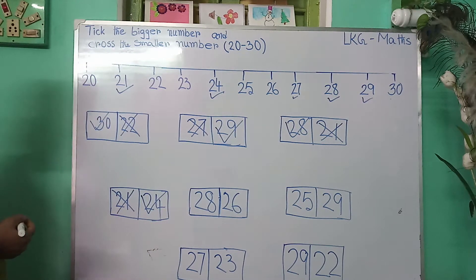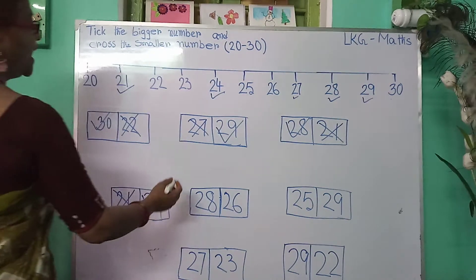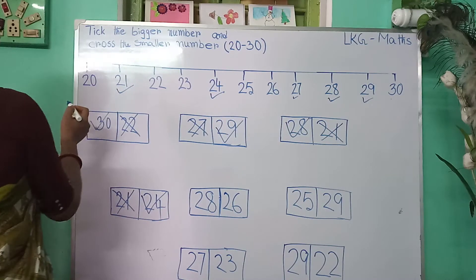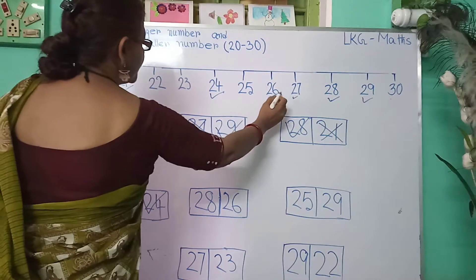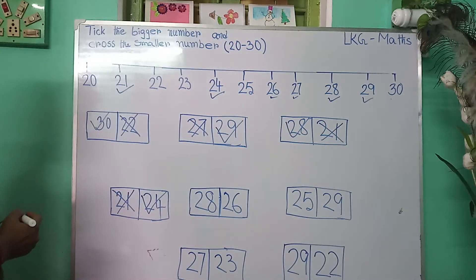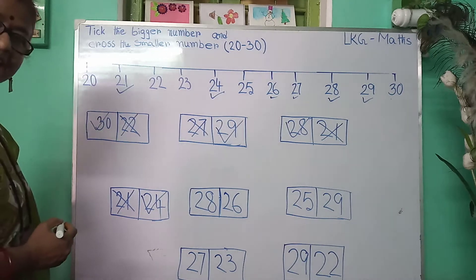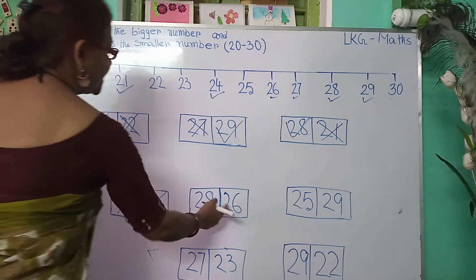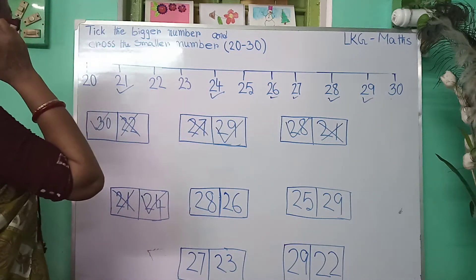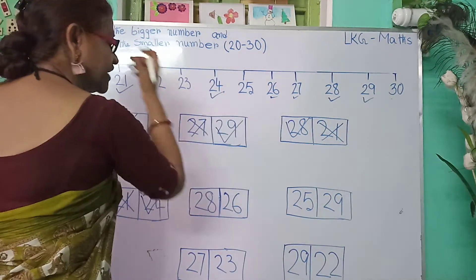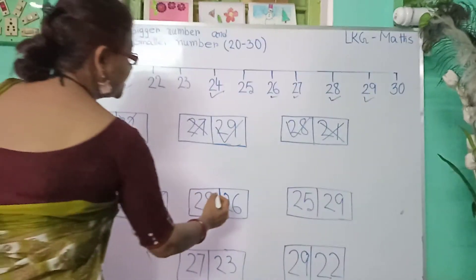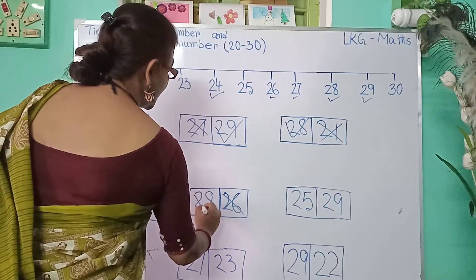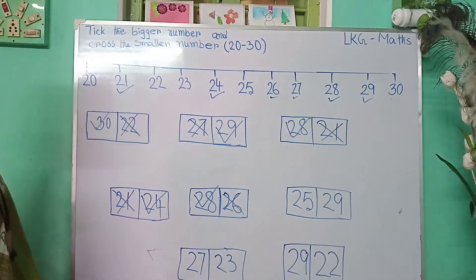Here, 28 and 26. In between the two numbers, 28 is here and 26 is here. Which have I written first? I have written 26 first, then 28. 26 is the smaller number and 28 is the bigger number, so I will put a tick on 28.